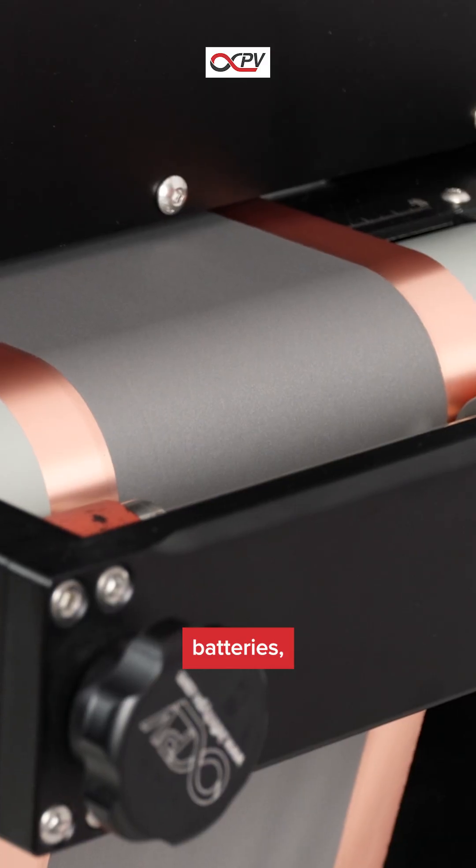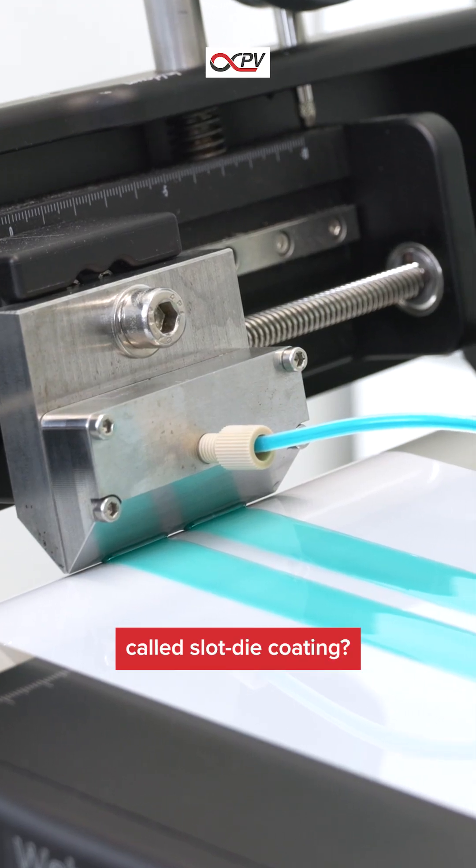Did you know that you can make solar cells, batteries, and even medicine using a process called slot die coating?